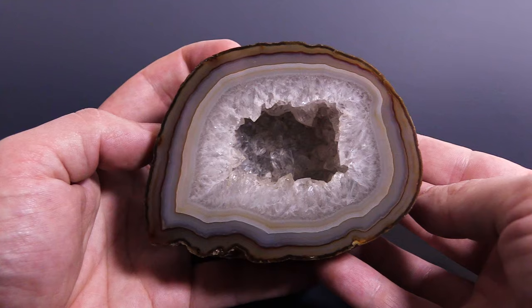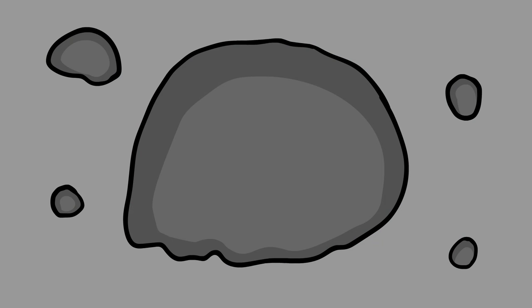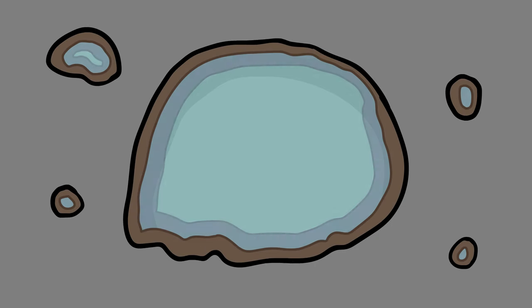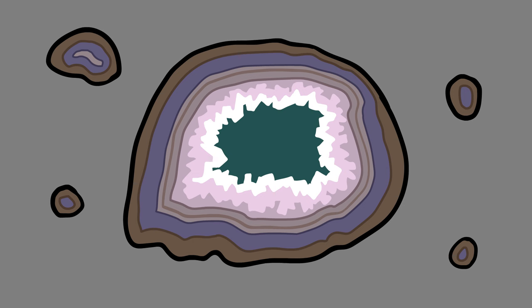In the distant past, this agate was a cavity — a simple hole in a rock, a bubble that formed in lava as it cooled. Rainwater slowly seeped through the lava rock and filled the hole, bringing microscopic minerals with it that were trapped as the water continued downward. When the mineral concentration was too high for the water to handle, the minerals crystallized, slowly forming solid rings along the inside surface of the cavity.